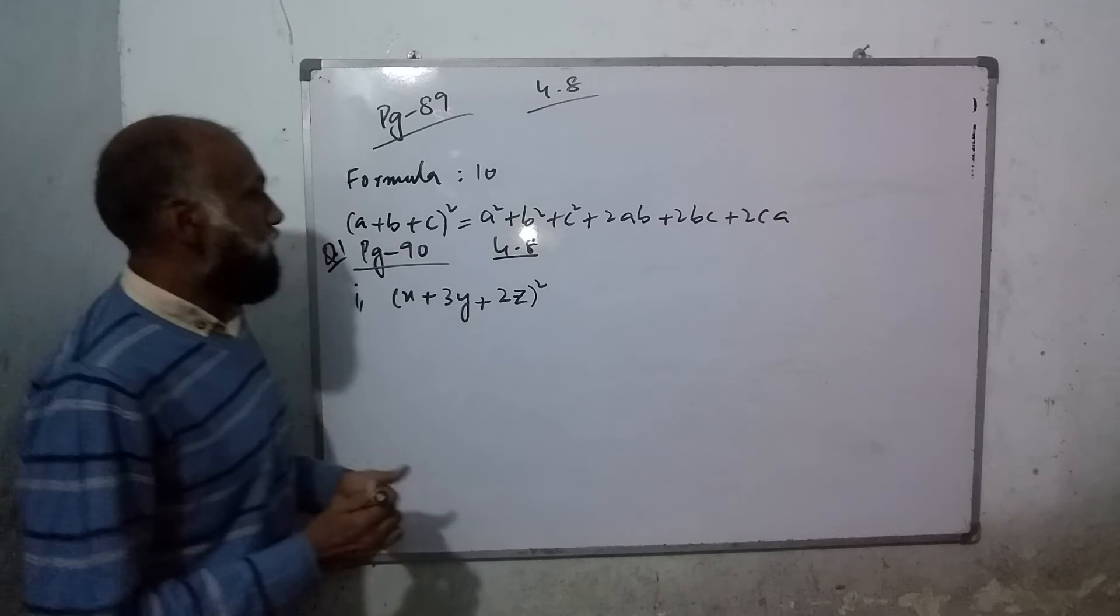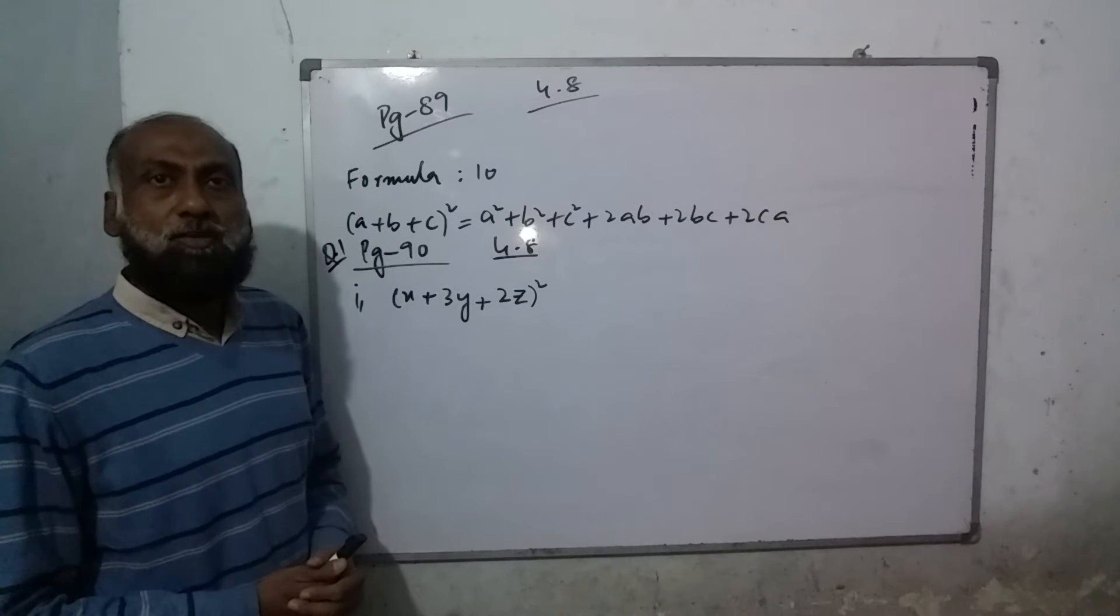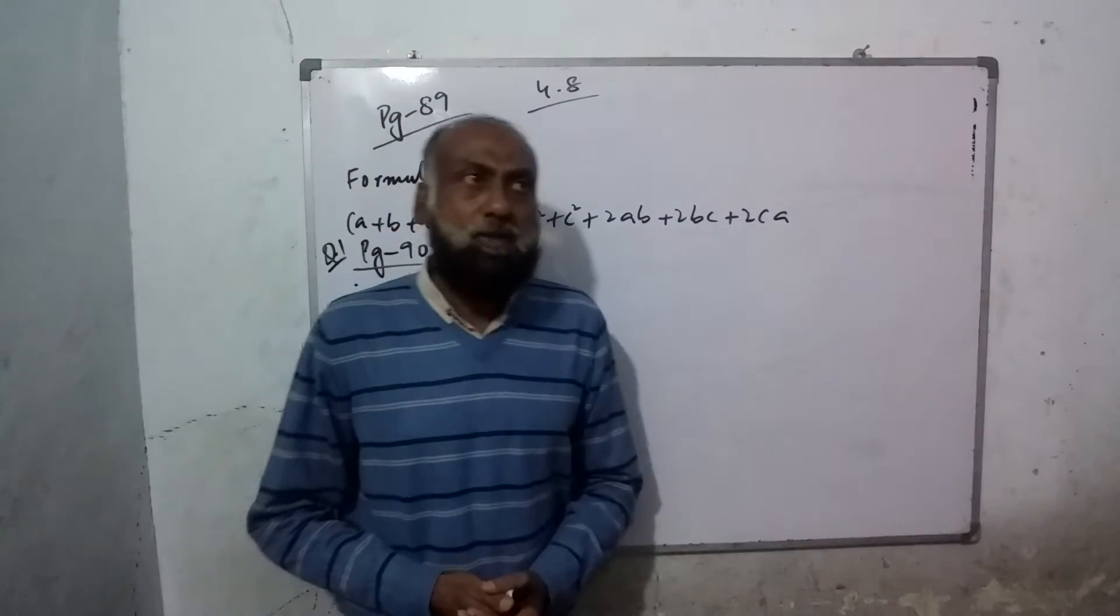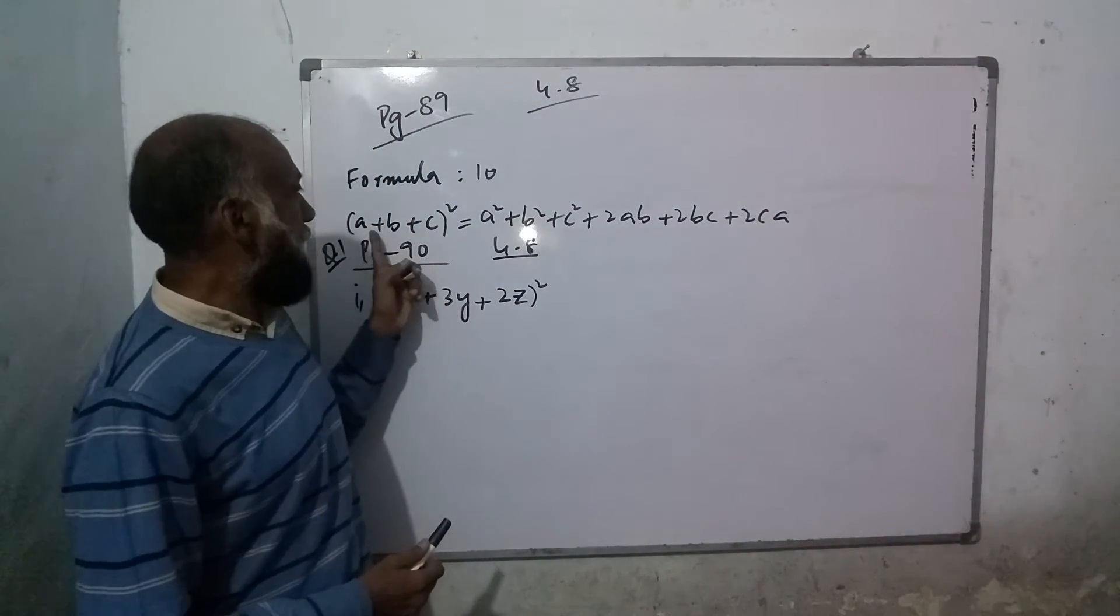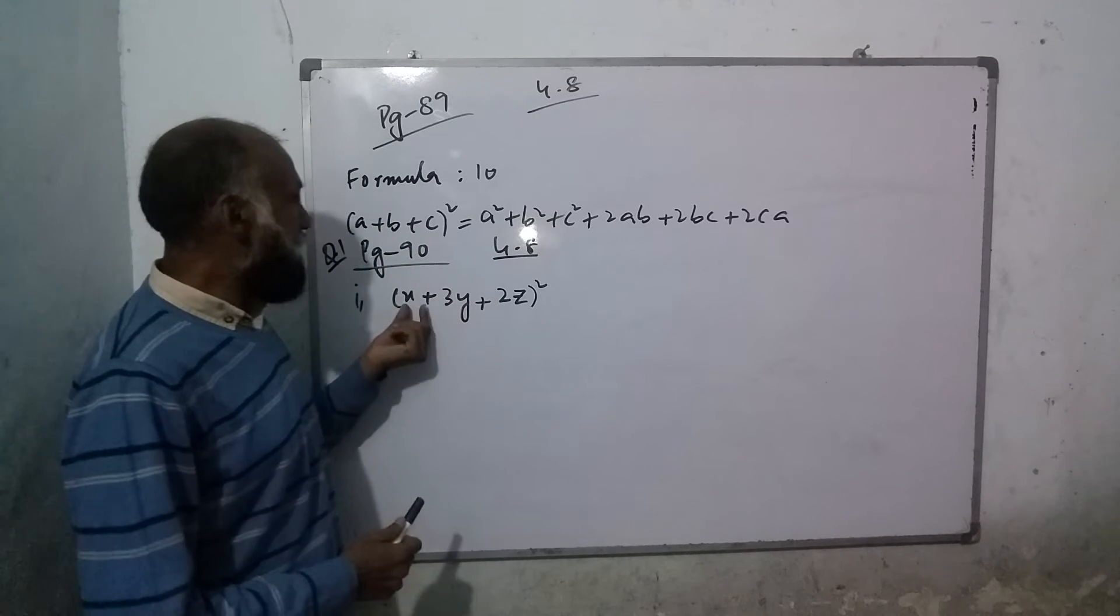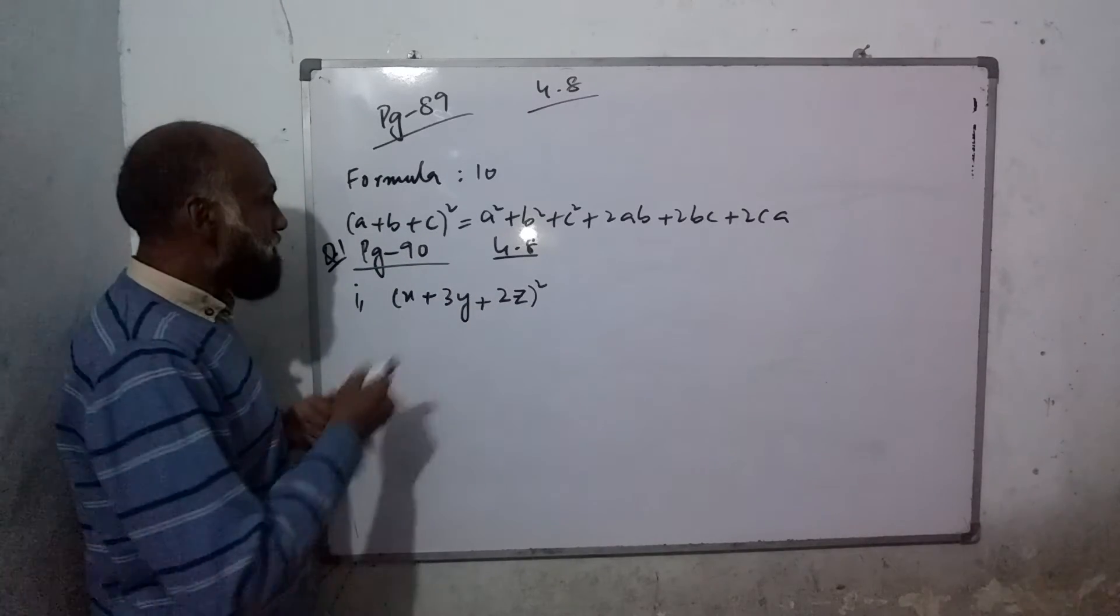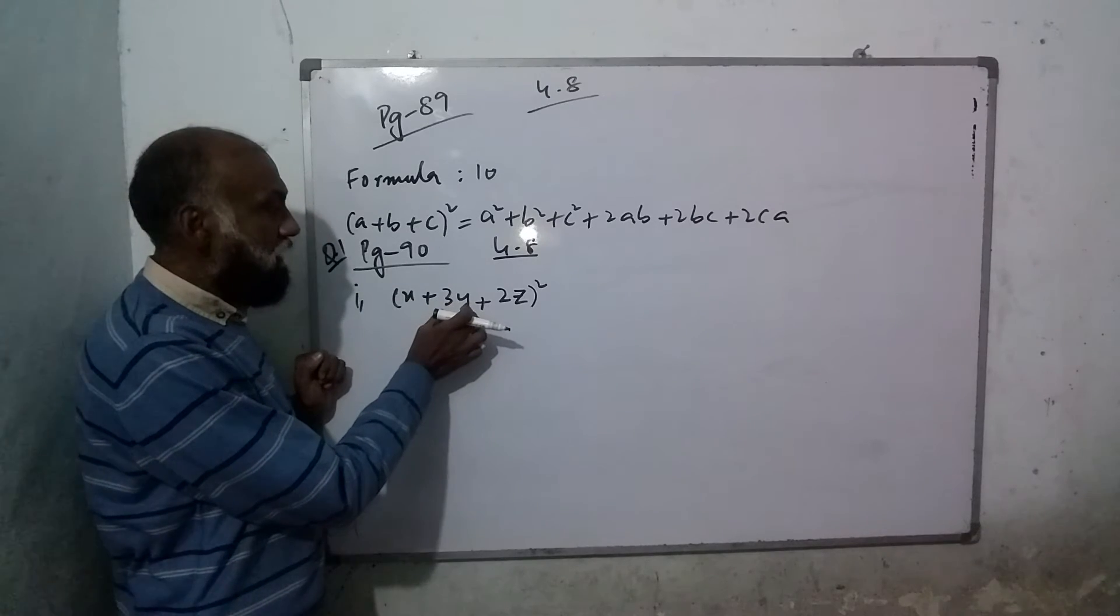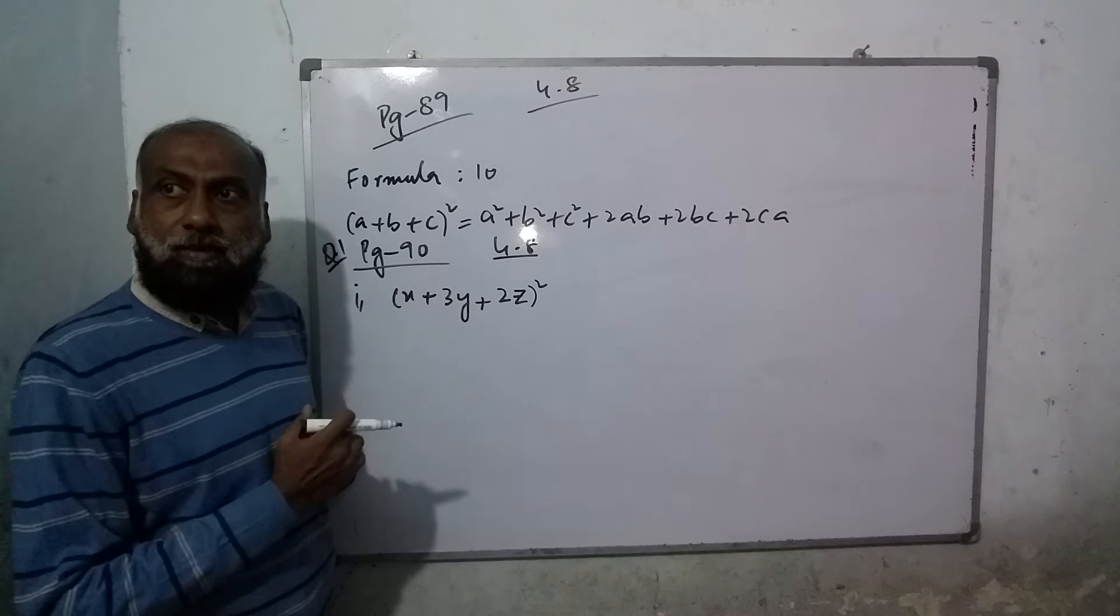Now look at the example compared to the formula. We have a+b+c in the formula, and x+3y+2z in our example. So here a is x, b is 3y, and c is 2z.